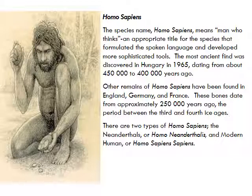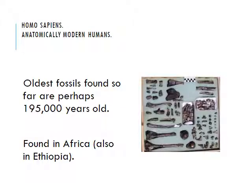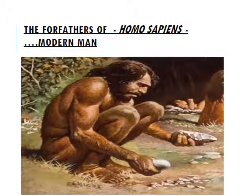The most ancient find of Homo sapiens was discovered in Hungary in 1965, dating from about 450,000 to 400,000 years ago. Other remains have been found in England, Germany, and France, dated from approximately 250,000 years ago during the period between the third and fourth ice age. There are two types of Homo sapiens: the Neanderthals and modern humans. The oldest fossil of anatomically modern humans found so far is perhaps 195,000 years old, found in Ethiopia, Africa.